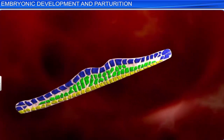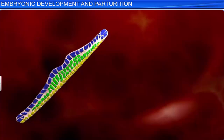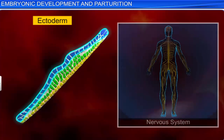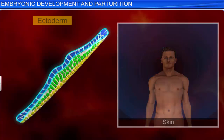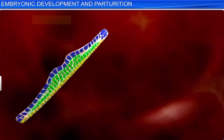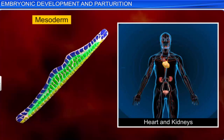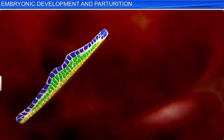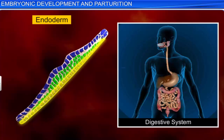The term germ layer indicates that each of the layers gives rise to tissues. The ectoderm, for instance, gives rise to the nervous system and the skin. Whereas the mesoderm develops into muscles and organs such as the heart and kidneys. While the endoderm gives rise to the entire digestive system.